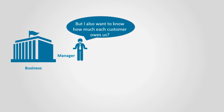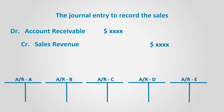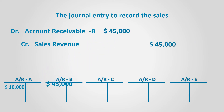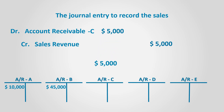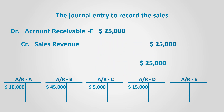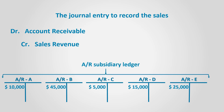But the manager will also be interested in knowing how much each customer owes. In order to answer this question, we should consider the credit sales to each customer while we record the journal entry. We can add each customer's name or account code to each sales transaction, which will create an individual account to know their respective balances. These individual accounts are part of a record called the account receivable subsidiary ledger.